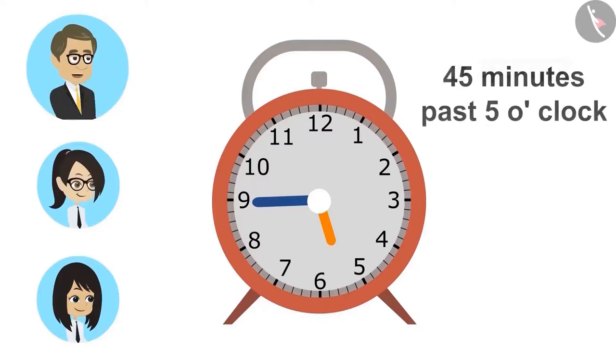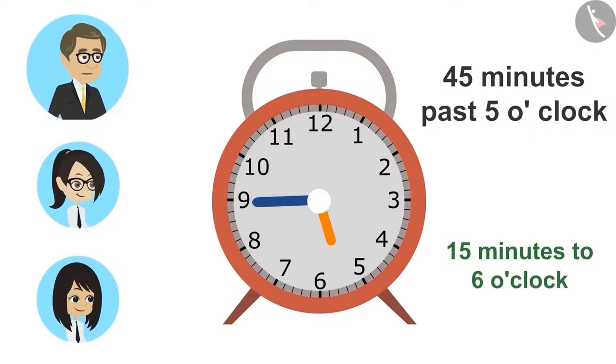As Vanna said, it is 45 minutes past 5 in the clock. This means that it is 45 minutes more than 5 o'clock. And as Neha told that it is 15 minutes to 6 o'clock, that means it is 15 minutes short of 6 o'clock.